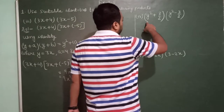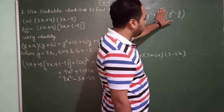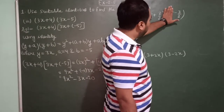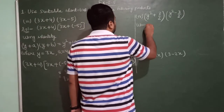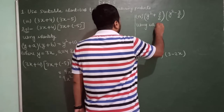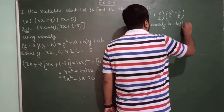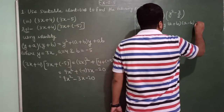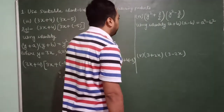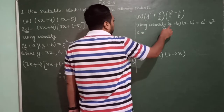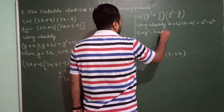Now the fourth one is of the form (a + b)(a − b). Using the identity: a plus b into a minus b equals a squared minus b squared. What is a over here? a is equal to y squared and b is equal to 3 upon 2.